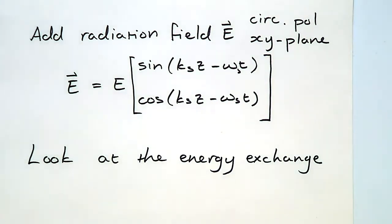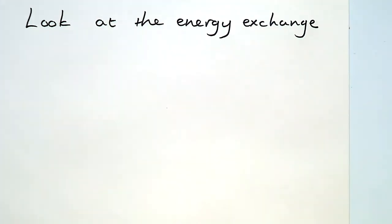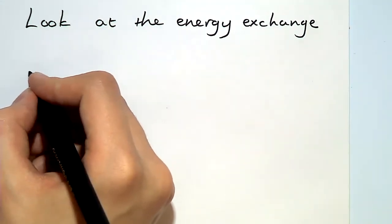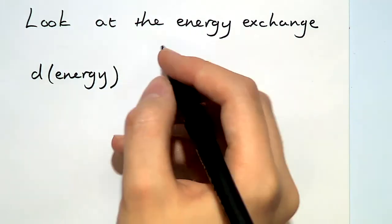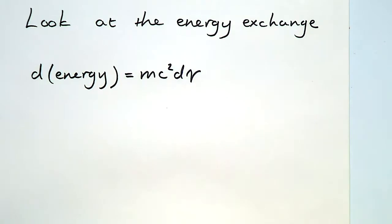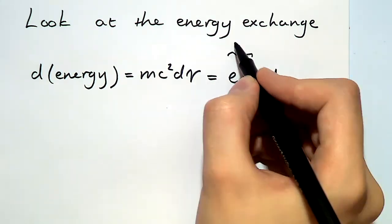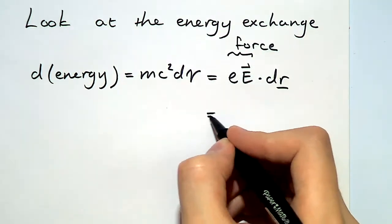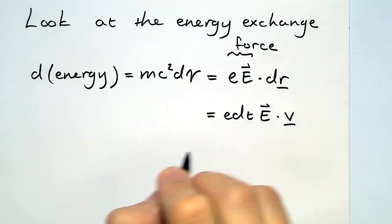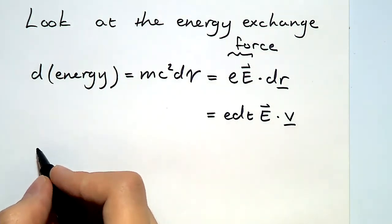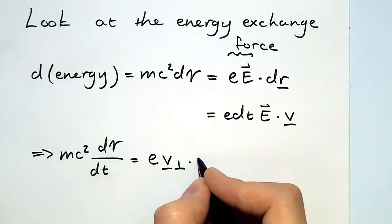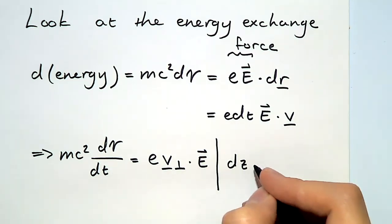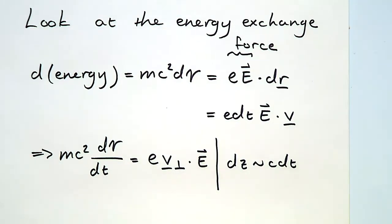We're interested in the energy exchange between the electrons and this field. Using the well-known formula that the change in energy is given by the dot product between the force and the displacement of the electrons, which we can write down in terms of the velocity and the change in time, we get that the change in the relativistic energy, because the electromagnetic field is in the x-y plane, is just proportional to the perpendicular velocity.